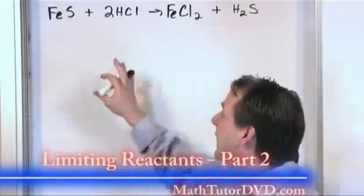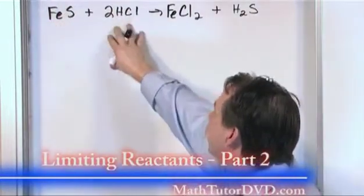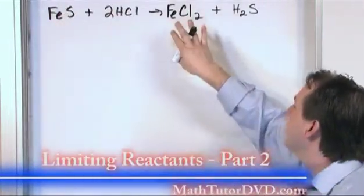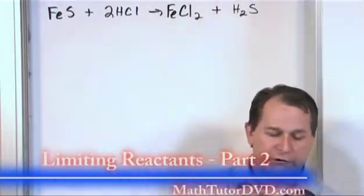Okay, our next problem uses this reaction on the board. We have some iron sulfide mixing with hydrochloric acid yields iron chloride and hydrogen sulfide. And this is a balanced chemical reaction on the board.